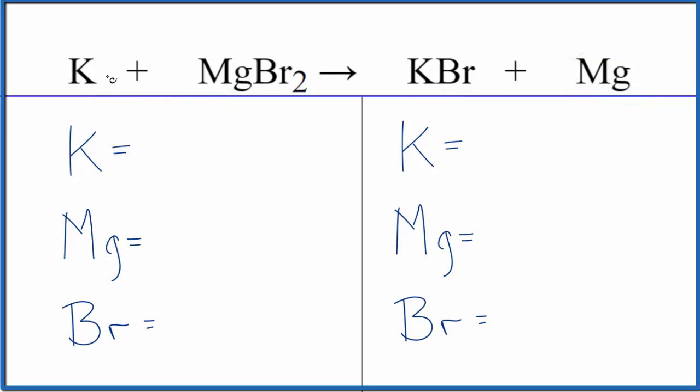To balance the equation, let's count the atoms up. We have one potassium, one magnesium, and two bromine atoms. On the product side, we have one potassium, one bromine, and one magnesium.